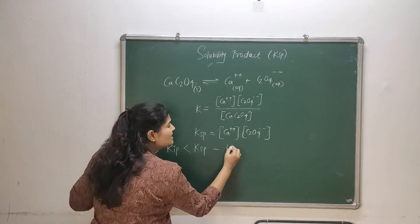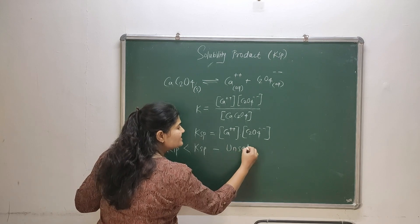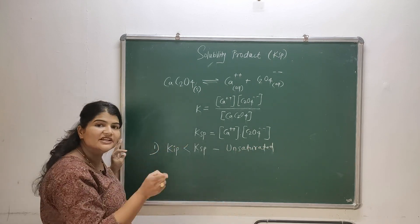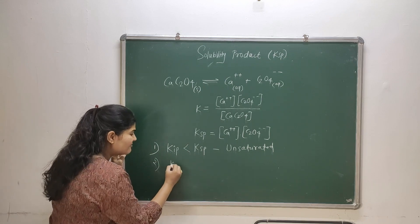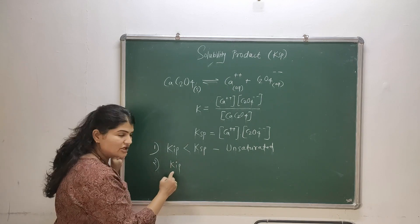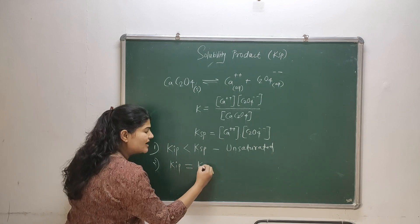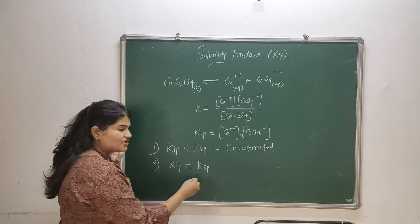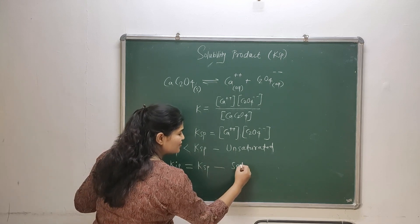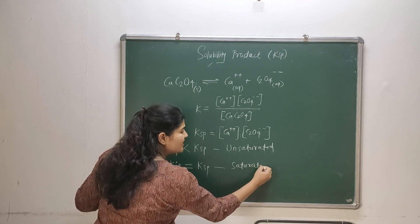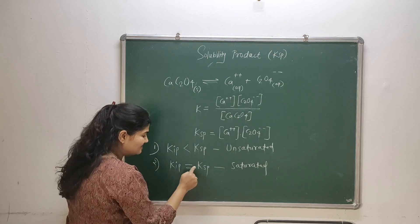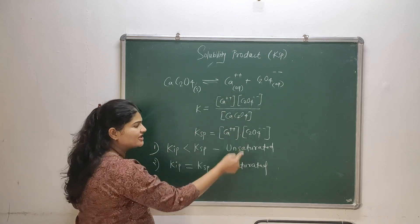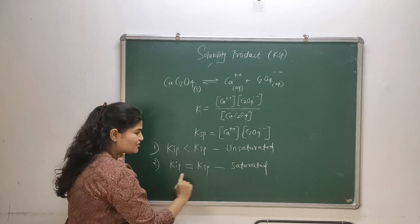The second condition: if my Kip, that is ionic product, is equal to my Ksp, which is solubility product, then this solution is saturated solution. Because that is what we call - we call solubility product as the ionic product at saturated point, saturated solution. So this is saturated.